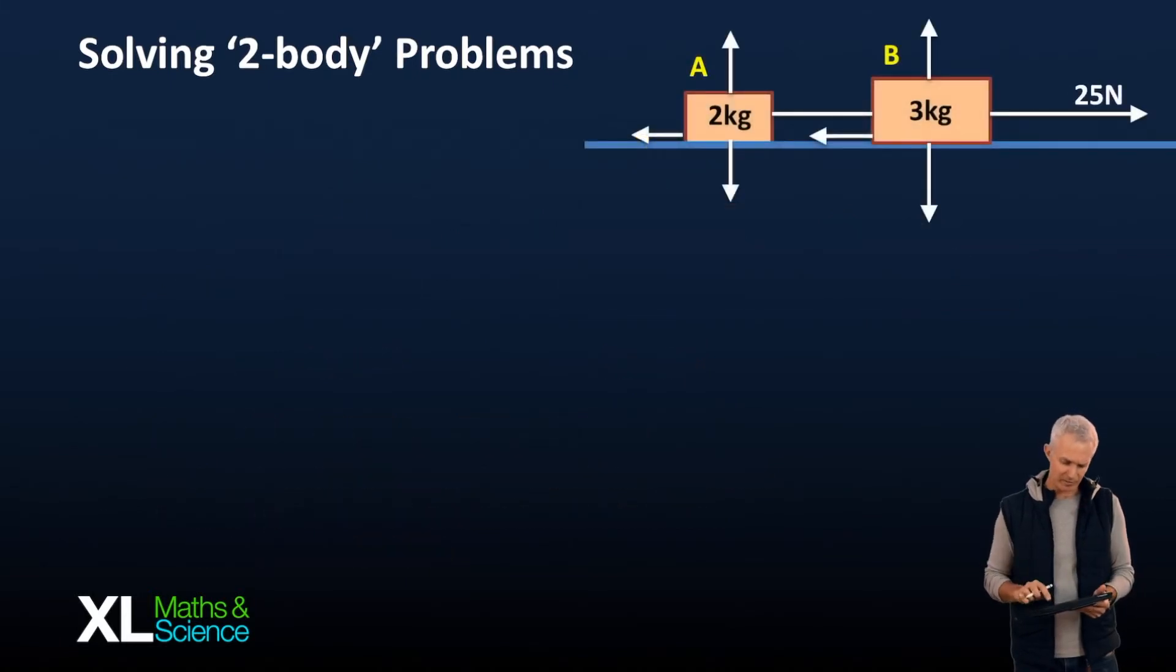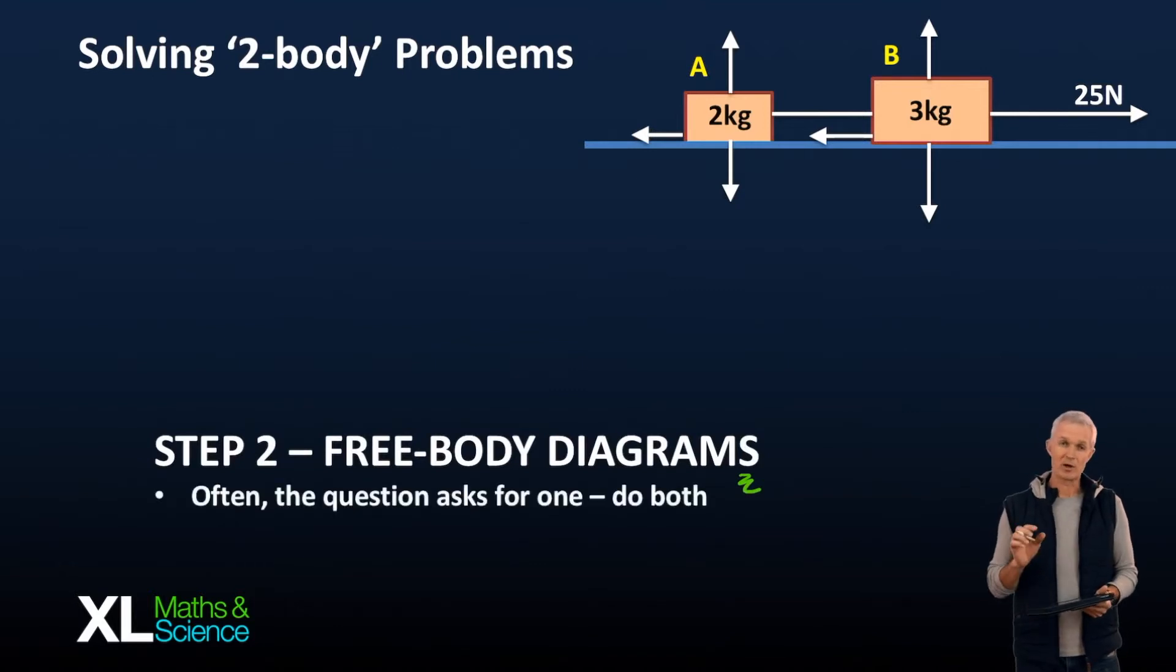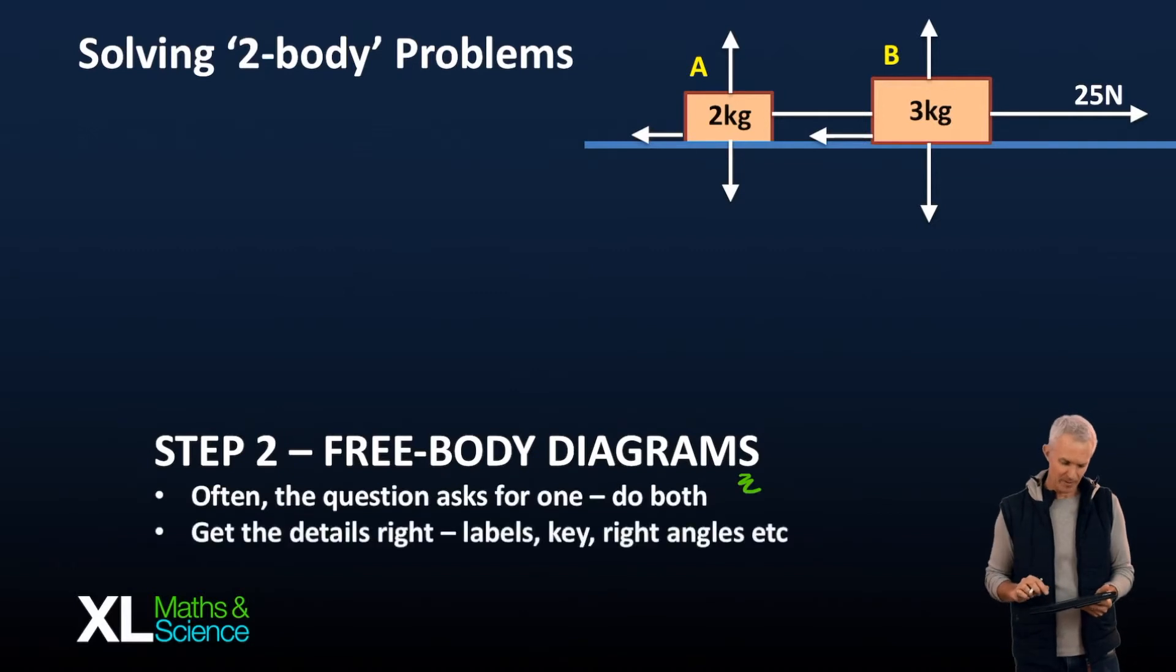Then we take all that information and the second step is going to be doing a free body diagram or free body diagrams. They will actually ask you for one almost inevitably but our suggestion is do both of them, one for each object. Get all the details right, make sure your labels are clear, etc.